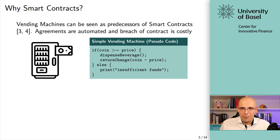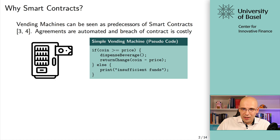That's a super simple pseudocode example of a vending machine that codifies an agreement and makes breach of contract harder — but only harder. You can still cheat it through well-known techniques like shaking the vending machine or trying to grab beverages. Obviously it's not recommended and it's highly illegal, but hypothetically you could still do it. It's not a completely bulletproof way of ensuring that the agreement will be enforced.